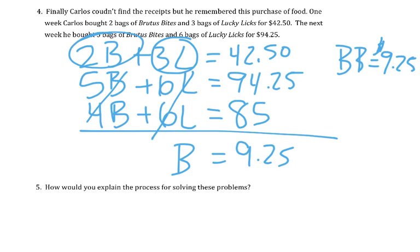Then we could take this first idea and double it. So $9.25 doubled is $18.50. Subtract that from $42.50. That would give us $24 for the three Lucky Licks. So each one would equal $8.00.